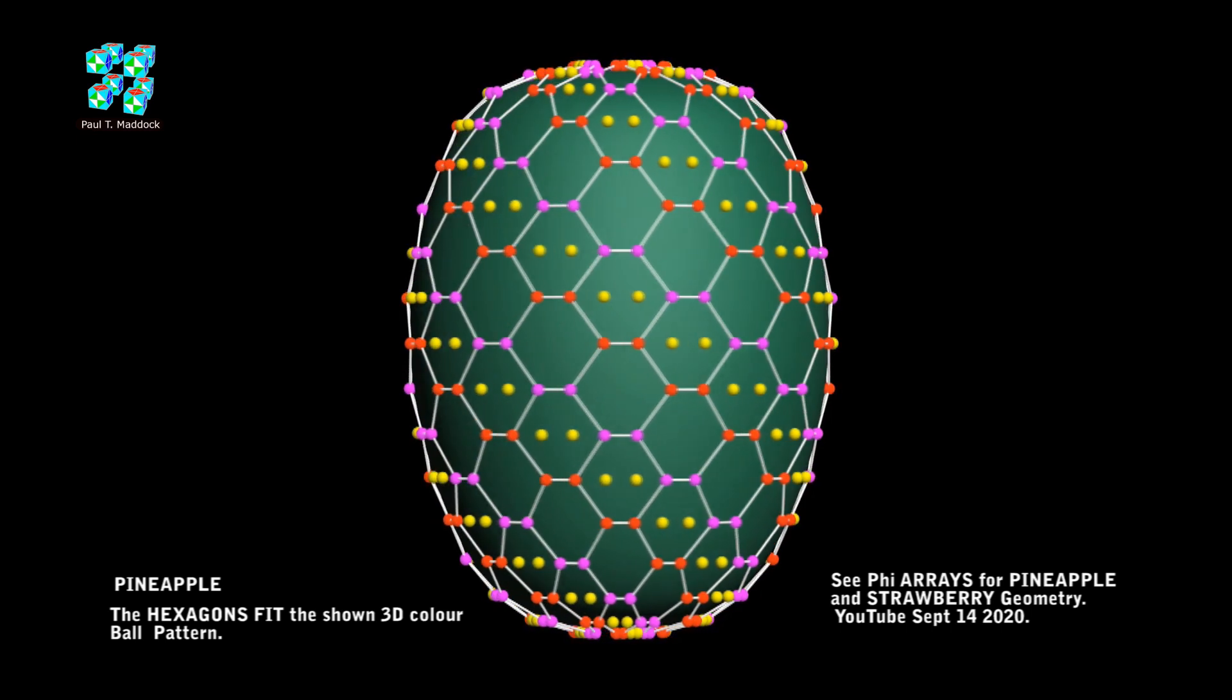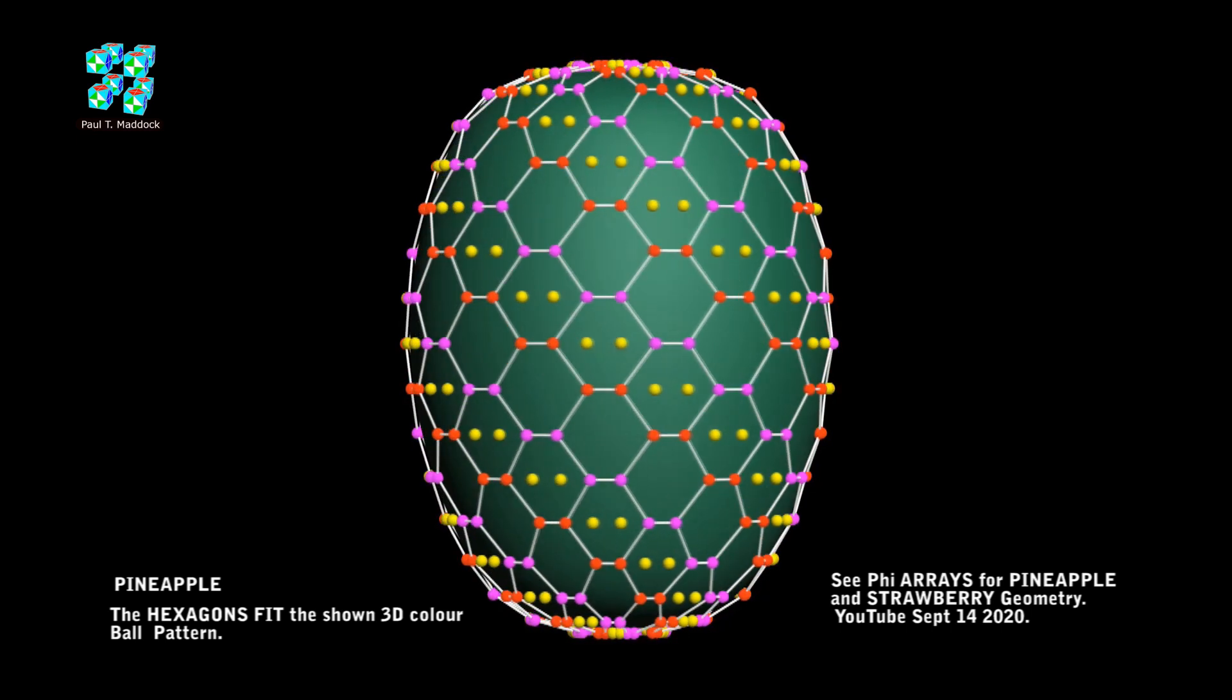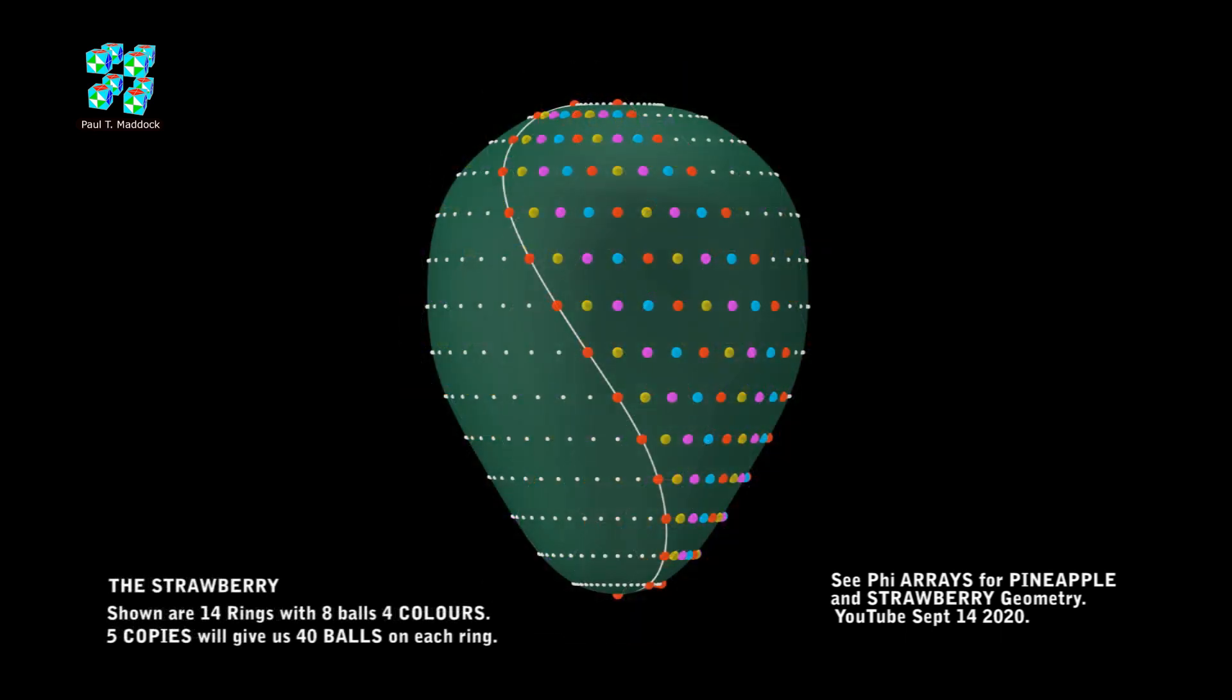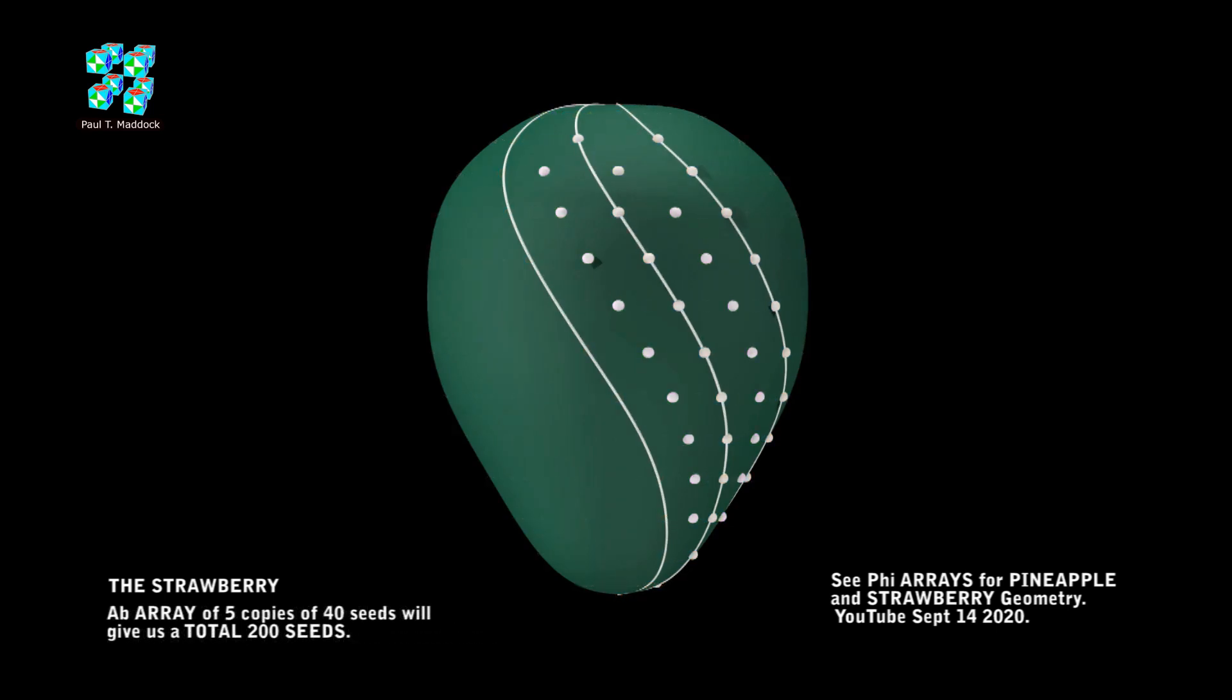I'm going to show you a very similar situation to give us the geometry of the 200 seeds for the strawberry. You can see the eight balls are in a similar pattern, but they shift one ball instead of two. I show how 40 seeds comes out of this configuration. When I give these swirl assemblies of 40 seeds a five polar array, this is what we have. We're left with a 200 seed strawberry.